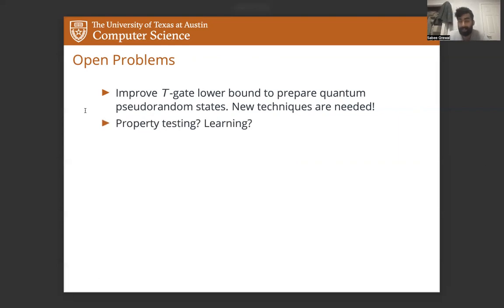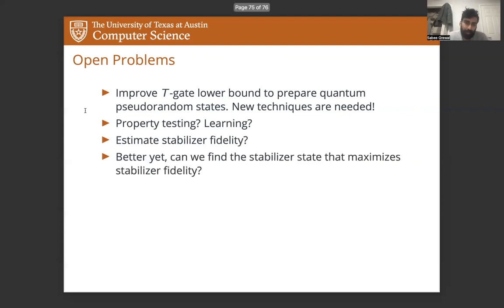In the learning and estimation direction, it would be nice to know if we can property test or learn low stabilizer complexity states, whether we can estimate stabilizer fidelity, and whether we can find stabilizer states that have large overlap with a given quantum state. And this could be extended to understanding how close a general unitary is to a Clifford circuit. And could lead, for example, to decompositions where you can decompose a quantum circuit into the Clifford part and the non-Clifford part.